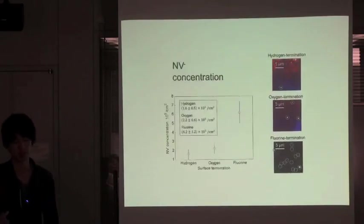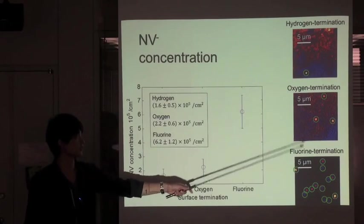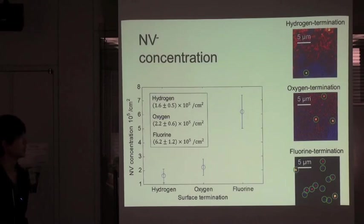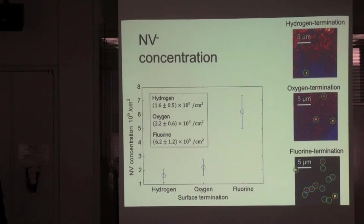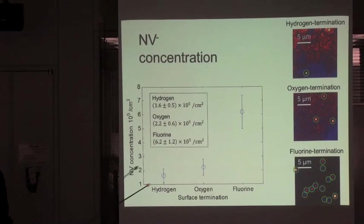So, we estimated the NV minus concentration of each termination, hydrogen and oxygen and fluorine. The NV minus concentration in oxygen and fluorine termination was slightly increasing compared to hydrogen termination.